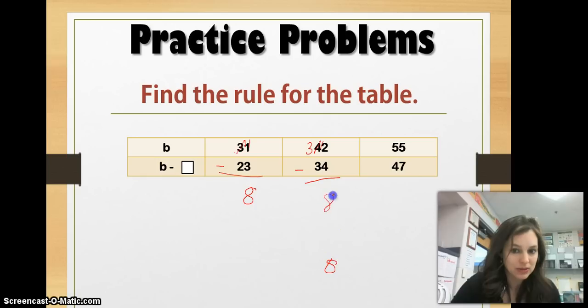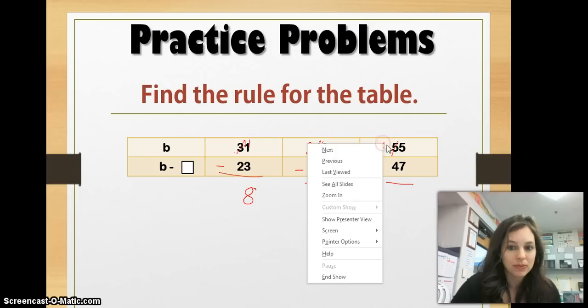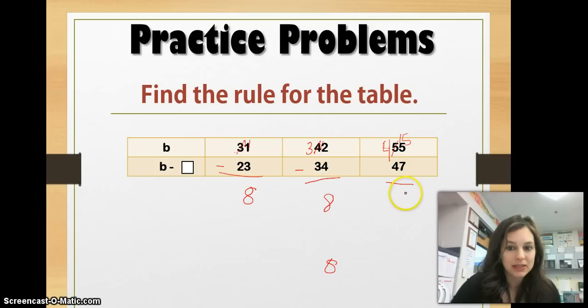Let's see if that helps if I continue subtracting. 42 minus 34, 2 minus 4, I can't do. So, I have to regroup. 12 minus 4 is 8. 3 minus 3 is 0. And 55 minus 47, again, I need to borrow. 15 minus 7 is 8.